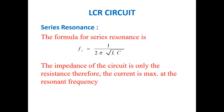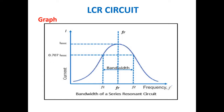The formula for series resonance is Fr = 1 / (2π√LC). The impedance of the circuit is only the resistance, therefore the current is maximum at the resonant frequency. In the LCR series connection graph, frequency is taken along the X-axis and corresponding current along the Y-axis. Taking 0.707 times the maximum current gives two points F1 and F2. The difference between F1 and F2 gives the bandwidth under series connection.